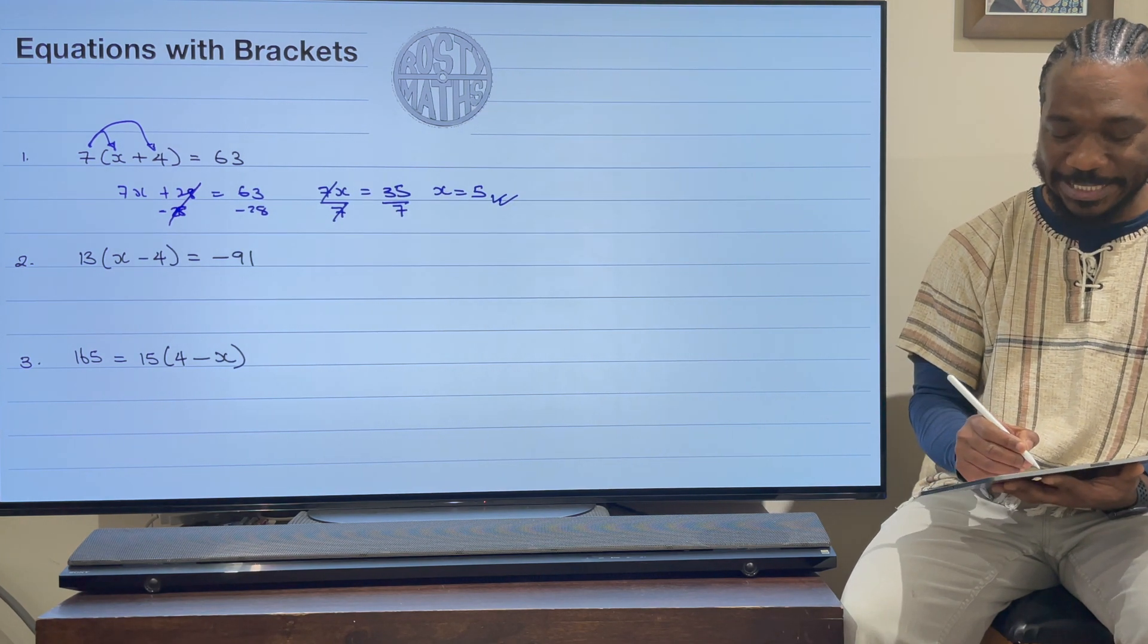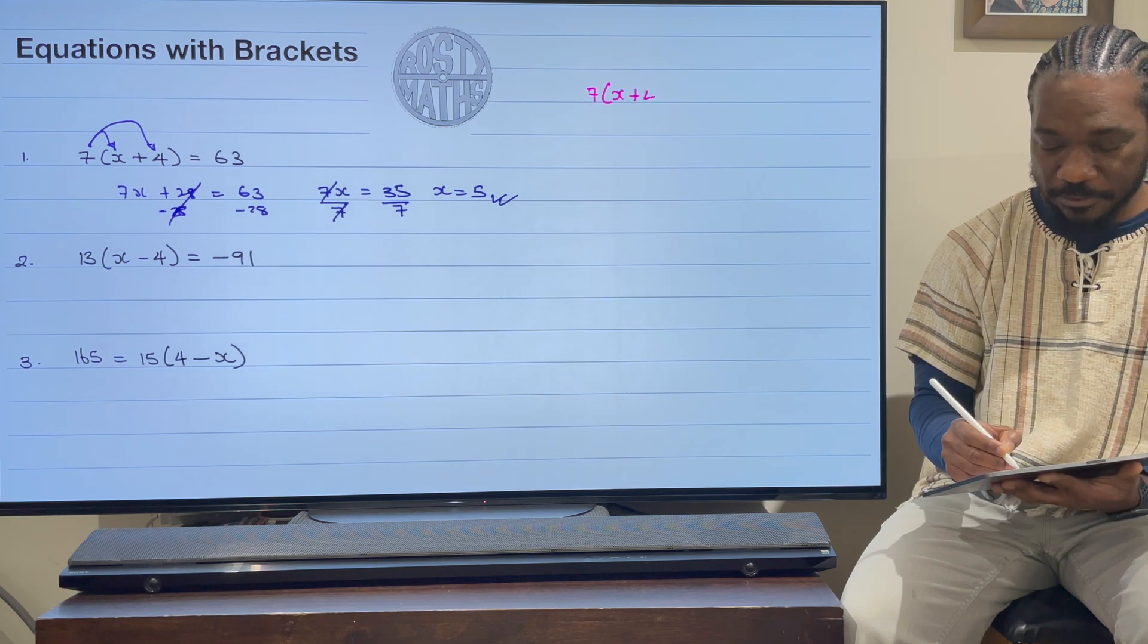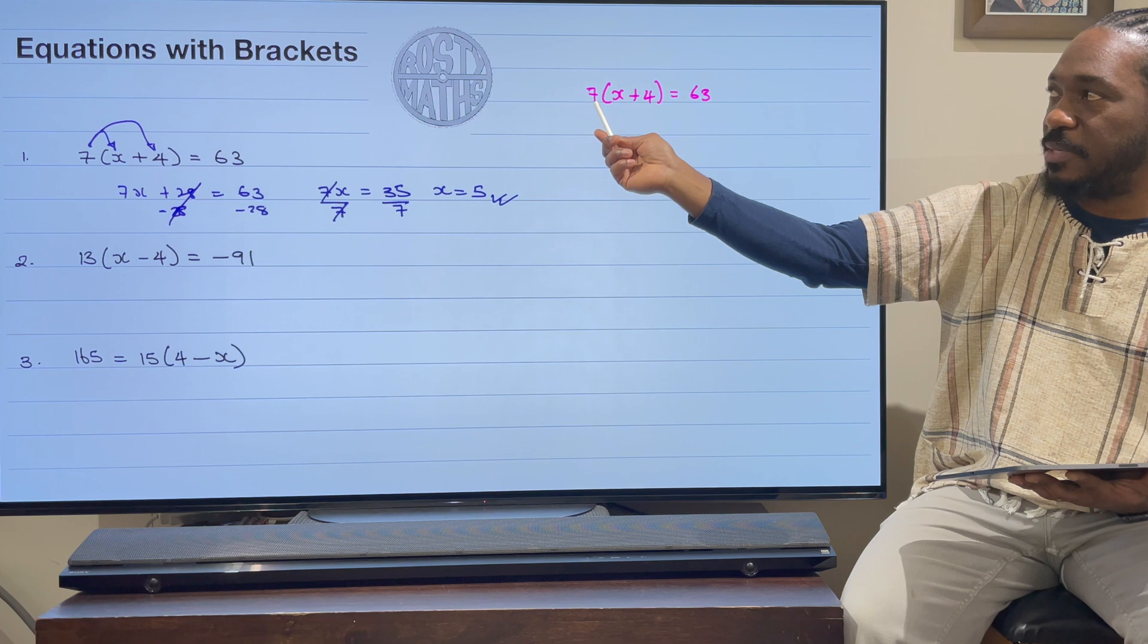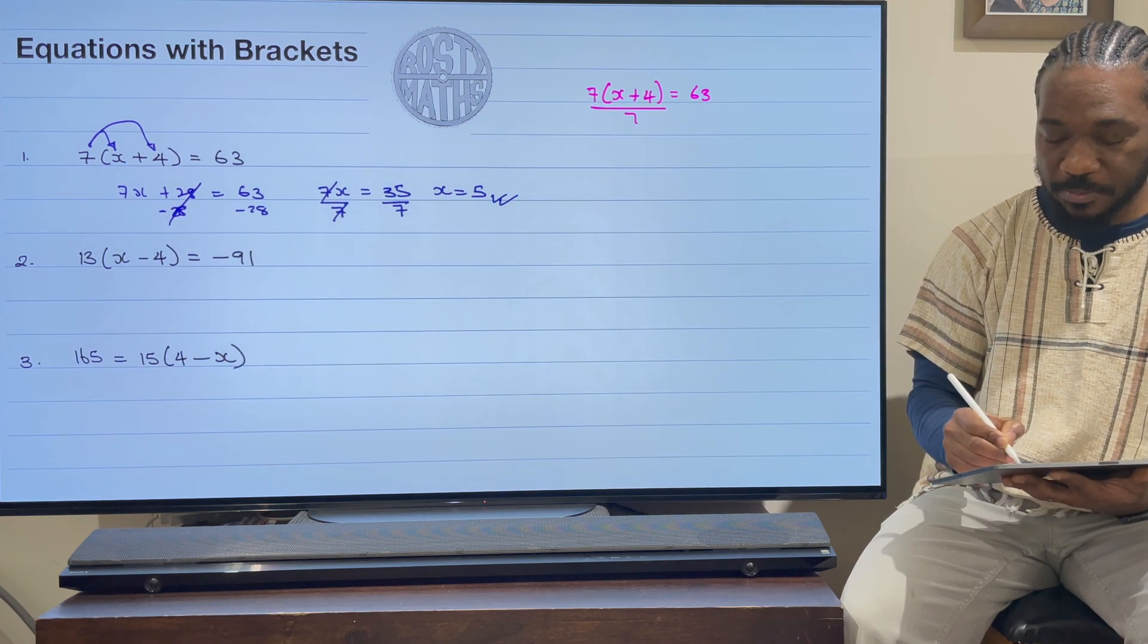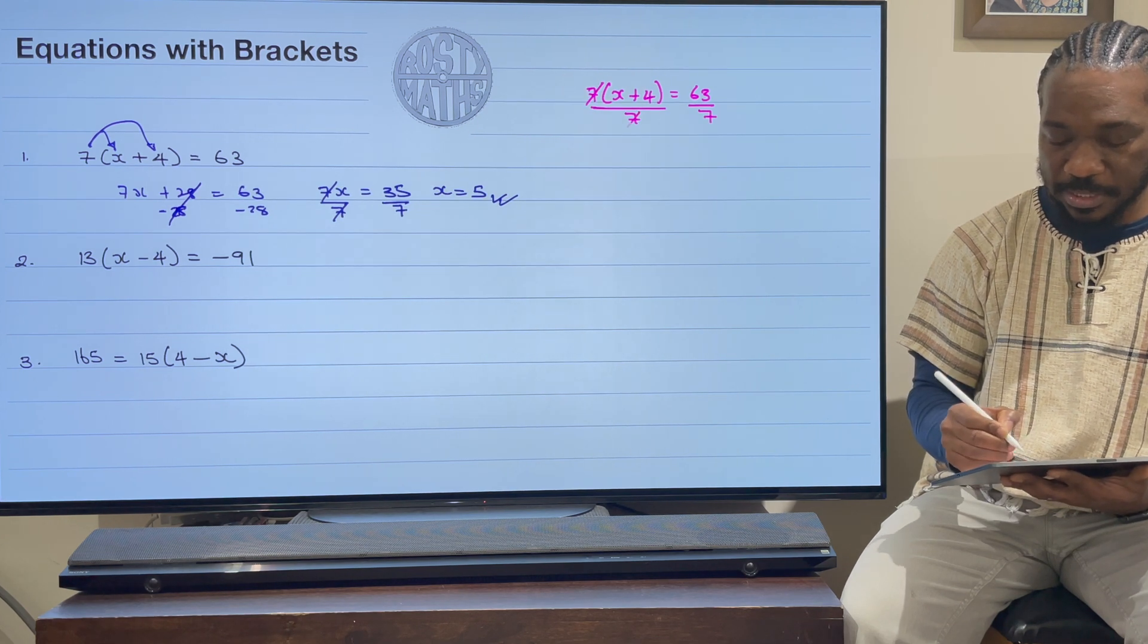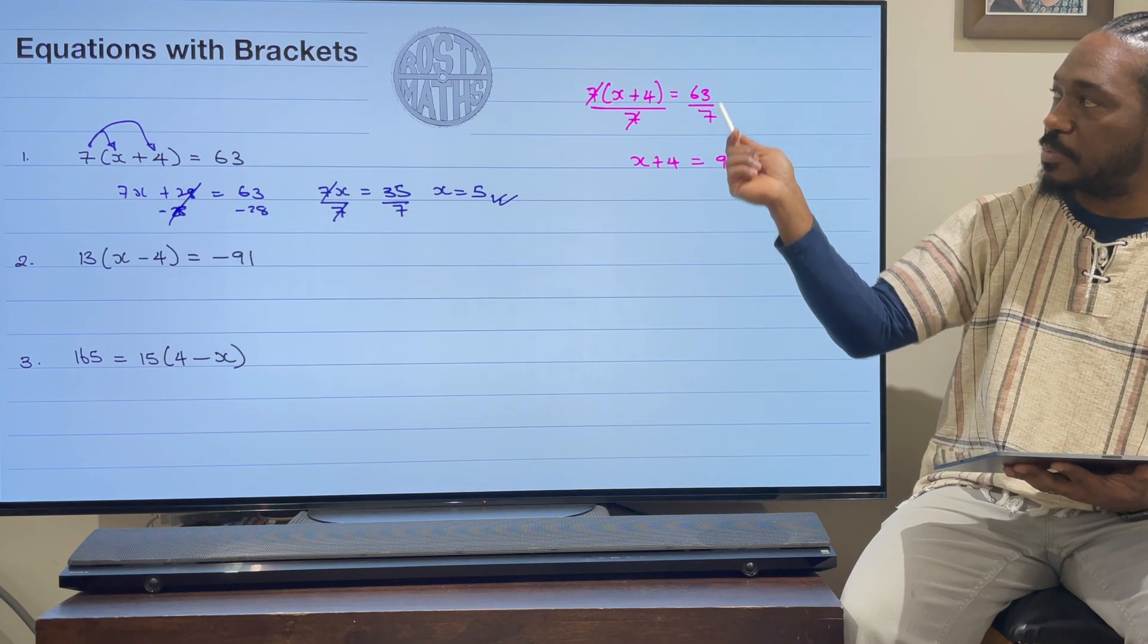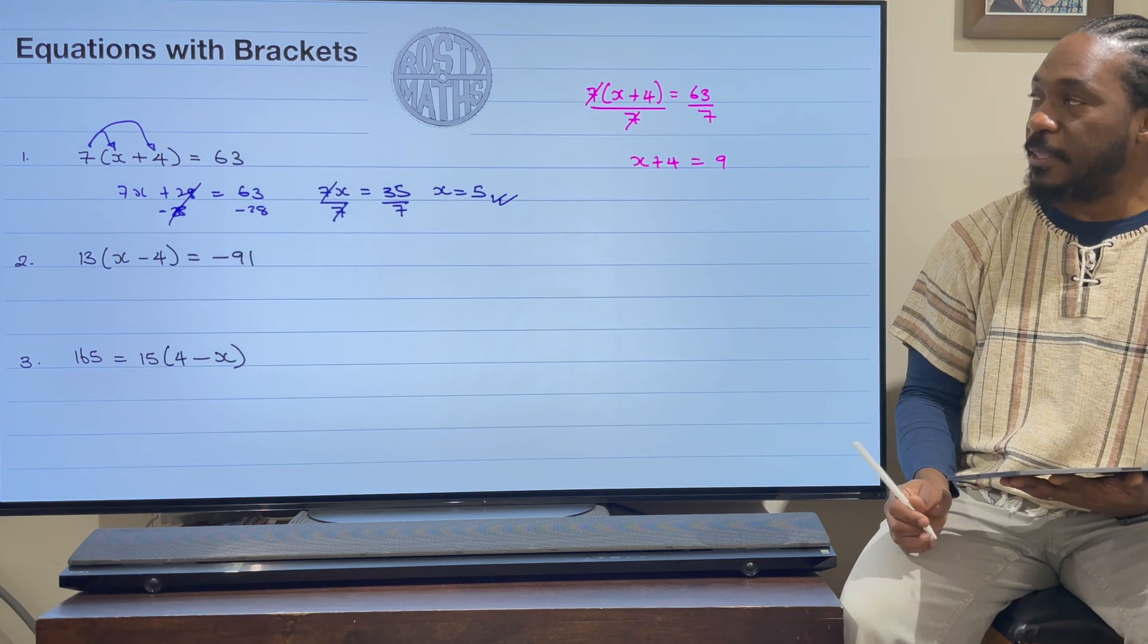Here's the second method, because I promised you two methods. So here's the second method, I'm going to go for hot pink. So the question is 7 times (x + 4) is equal to 63. If you're really eagle-eyed on this, you might recognize that you can divide by that 7 first. So I'm going to divide both sides by 7 like so. These 7s cancel out, leaving me with x + 4 is equal to 9, because 7 times 9 is 63.